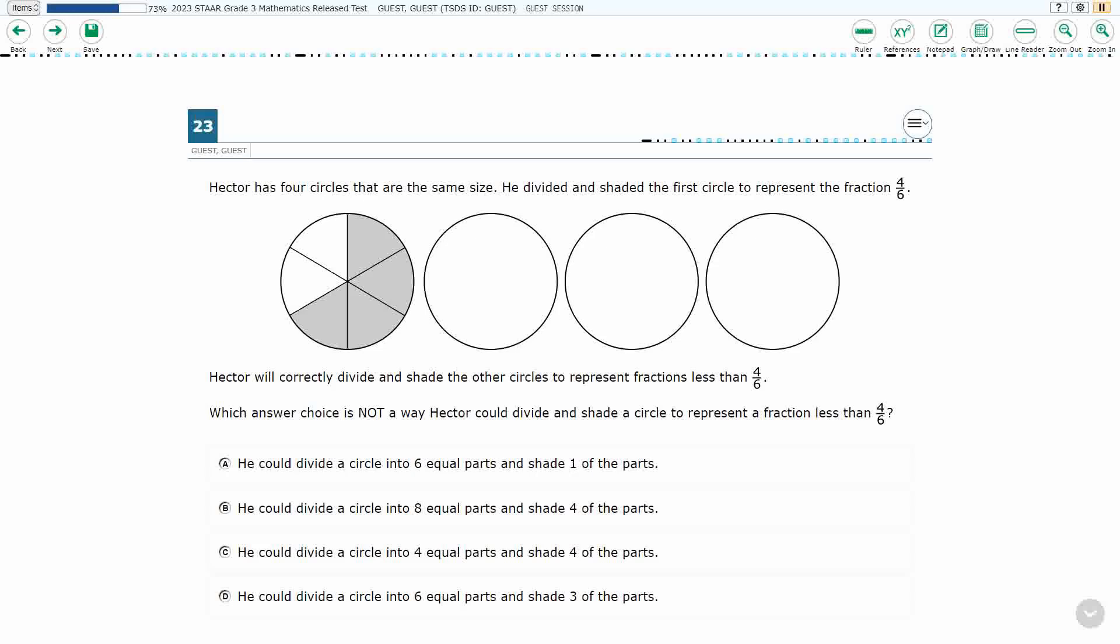Alright, so Hector's got four circles here. They all are the same size. They look like the same size, but you always want the problem to tell you that. He divided and shaded the first circle to represent the fraction 4/6. Alright, so that makes sense.